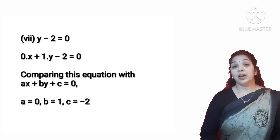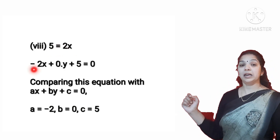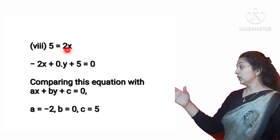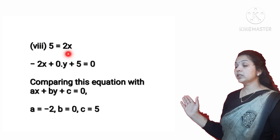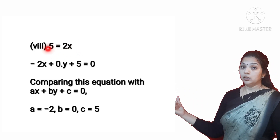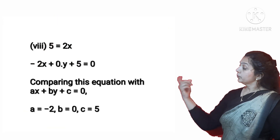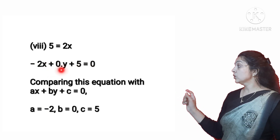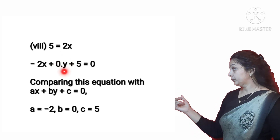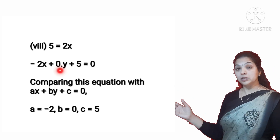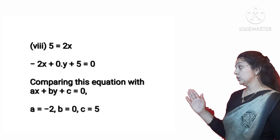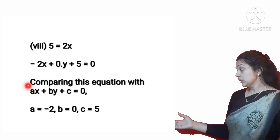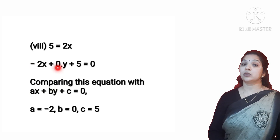The next part is 5 = 2X. Only the X term is given and the Y term is missing. Shifting 2X to the left hand side gives minus 2X + 5 = 0. Since Y is missing, we write 0 times Y, giving minus 2X + 0Y + 5 = 0. Comparing with the general form, A = minus 2, B = 0, and C = 5.